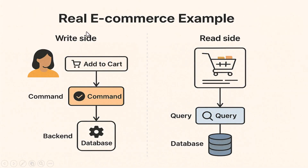Let's understand with a real e-commerce example. A customer clicks 'Add to Cart' — that triggers a command. The back end gets that command, checks if the product is in stock, then saves the cart item to the database. That's the write side: it handles changing the data. Now, when the customer goes to view their cart, that's a query. The system looks up all the items in the cart and sends that list back to the user quickly and efficiently. That's the read side — it only reads, it doesn't change anything. With CQRS we keep these two parts separate, so our code is cleaner and our system is easier to scale.